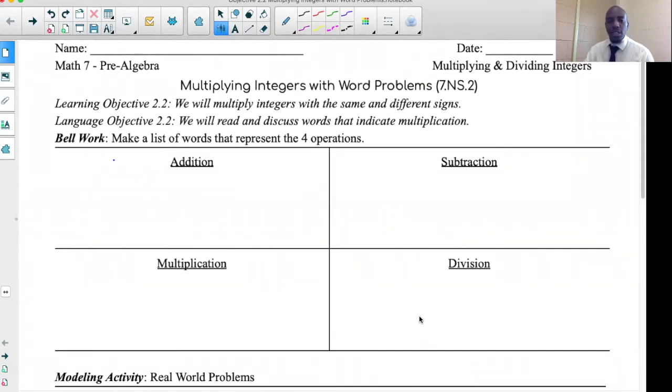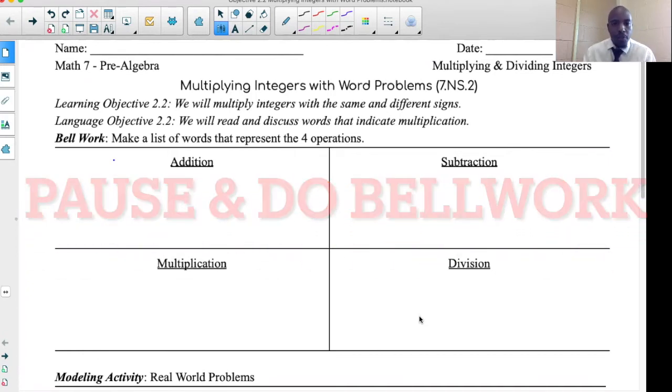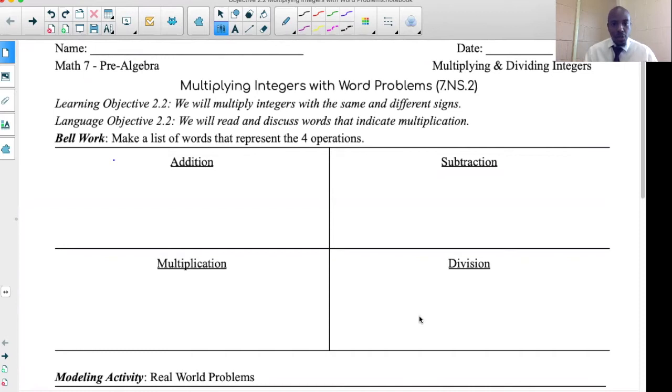We're looking at Lesson 2.2 where we're talking about multiplying integers, same sign and different signs. This is specifically focused on word problems. Let's dive in. Take this time to look at the bell work with me. As usual, pause the video if you need to so that you're able to write out a list of words that represent the four different operations: addition, subtraction, multiplication, division.